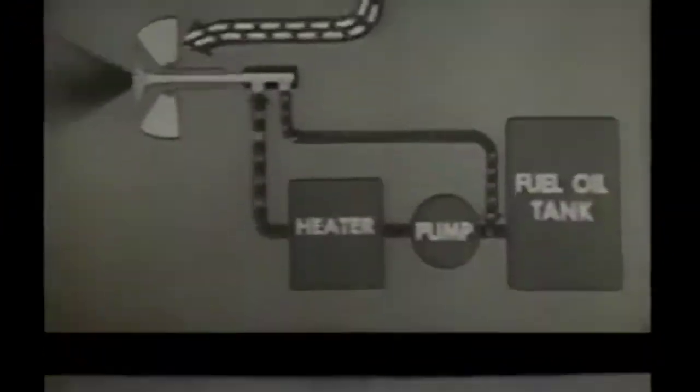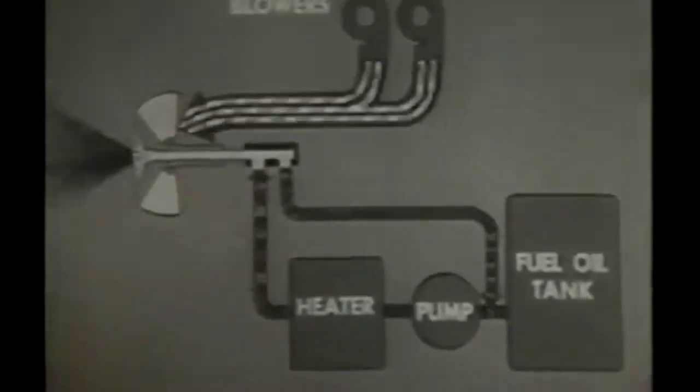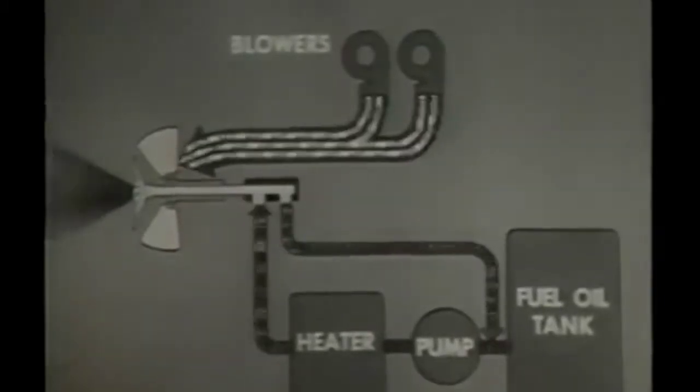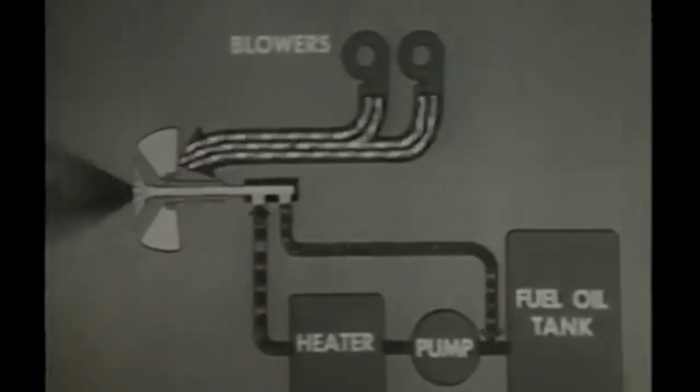Varying the speed and number of the forced draft blowers is the principal method of controlling the burner air supply. You can make limited adjustments to the air supply with the air doors.